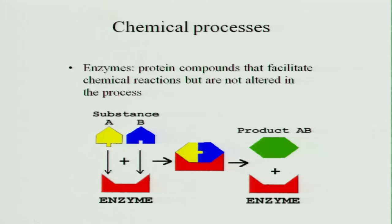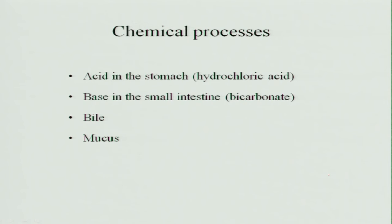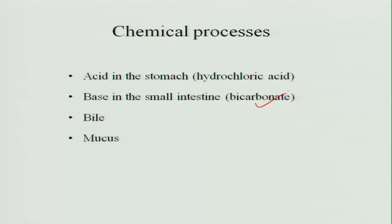Chemical processes also take place in the intestinal tract. Enzymes are produced throughout the gastrointestinal tract — the type of enzyme differs at each location and the pH of the food also changes. Enzymes are protein compounds that facilitate chemical reactions but are not altered in the process — they remain to be reused. For example, the stomach produces hydrochloric acid; when food reaches the small intestine, bicarbonate is produced to make the substance basic. Bile and mucus are also produced to improve digestion.